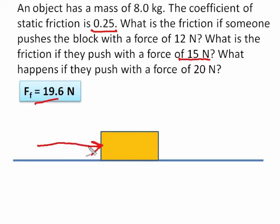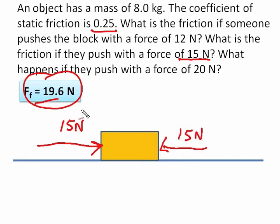If I push with 15 newtons, the maximum I can go to is 19.6. The friction will match me now with the 15 I'm pushing with. And so that's what happens. I push with 15, the friction will match me with 15.